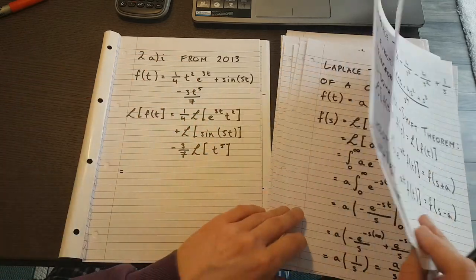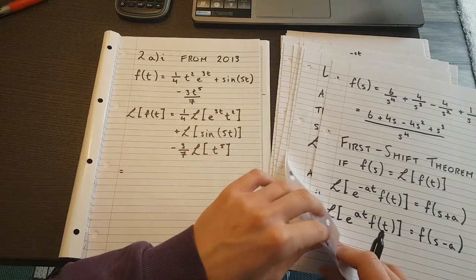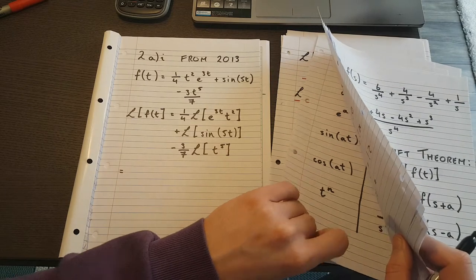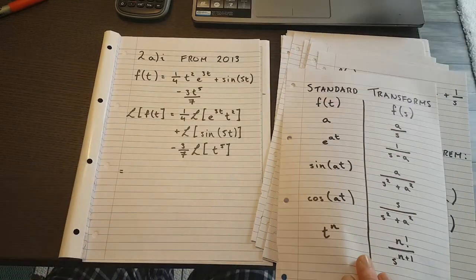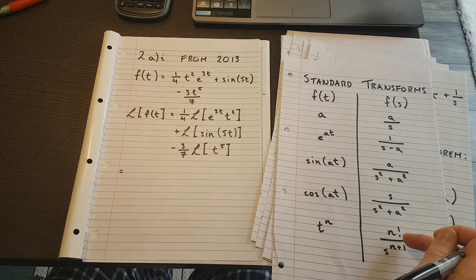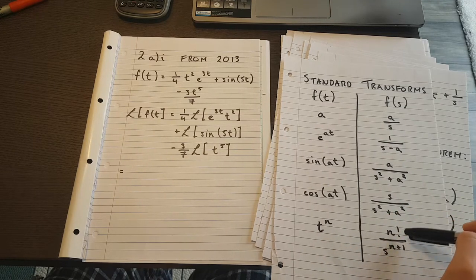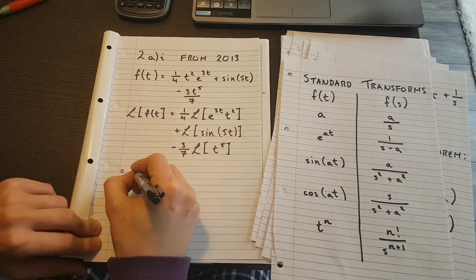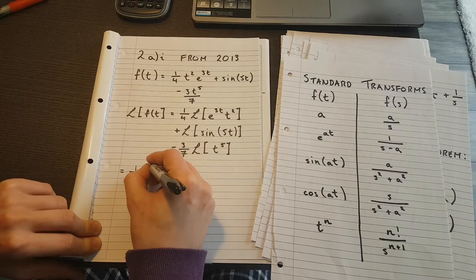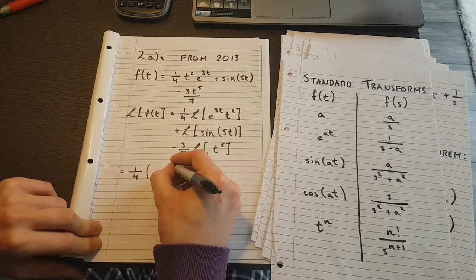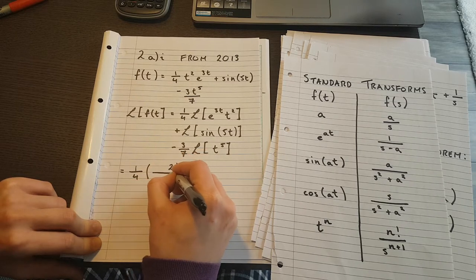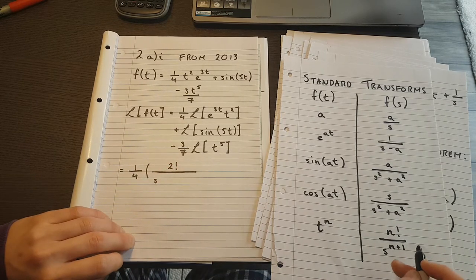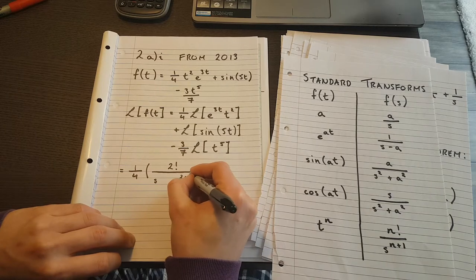So how do I deal with it as a shift? Well the first thing I have to look at here is what I would have for t². So let's go through past notes here and bring up the table of standards that I had. So t² is just going to give me 2 factorial and I'm going to have s^(2+1) on bottom. So that's going to be 1/4 and I would have 2 factorial and I would have s and the power would be 2 plus 1.